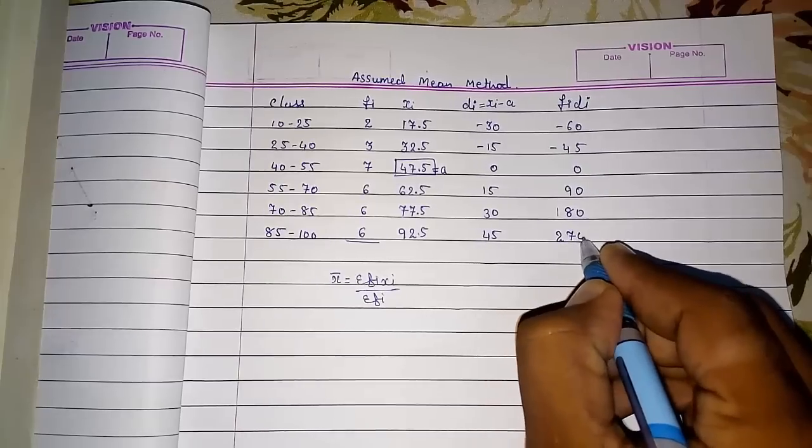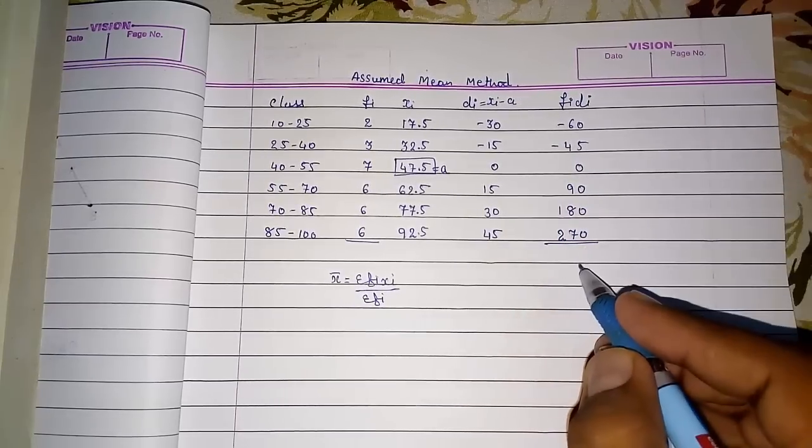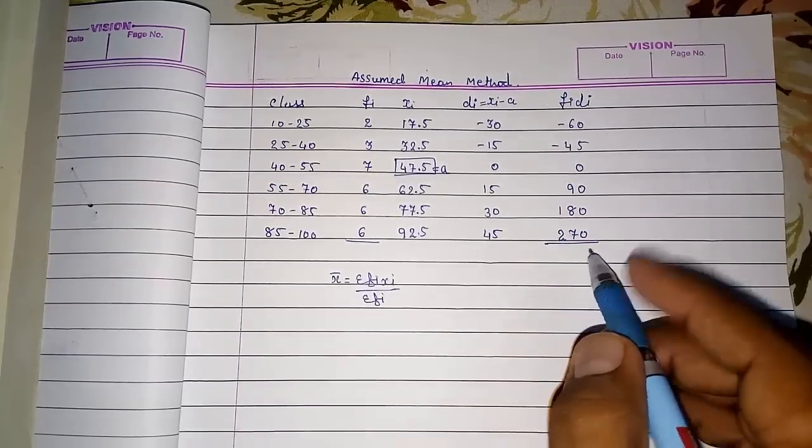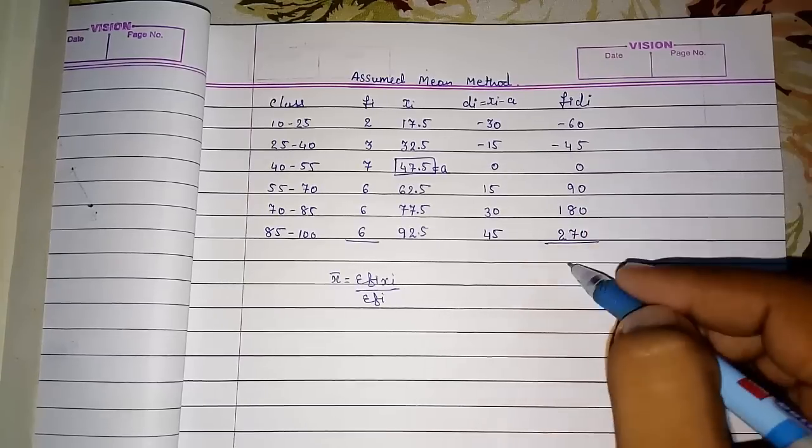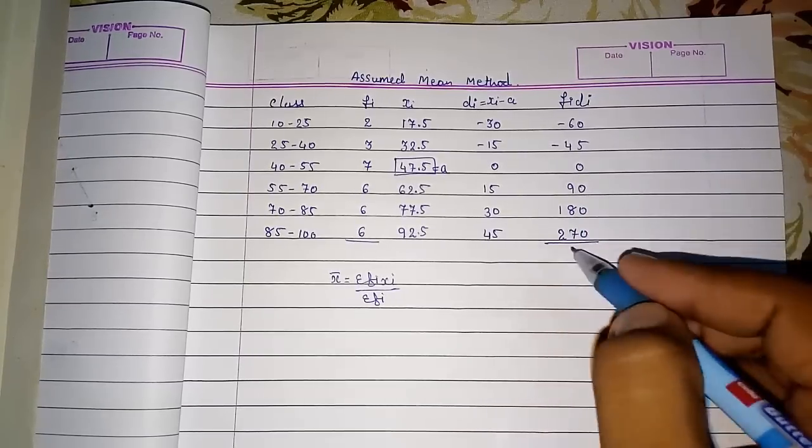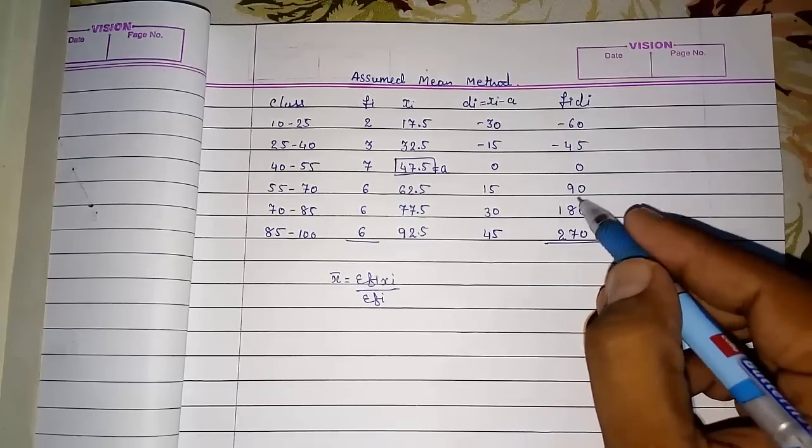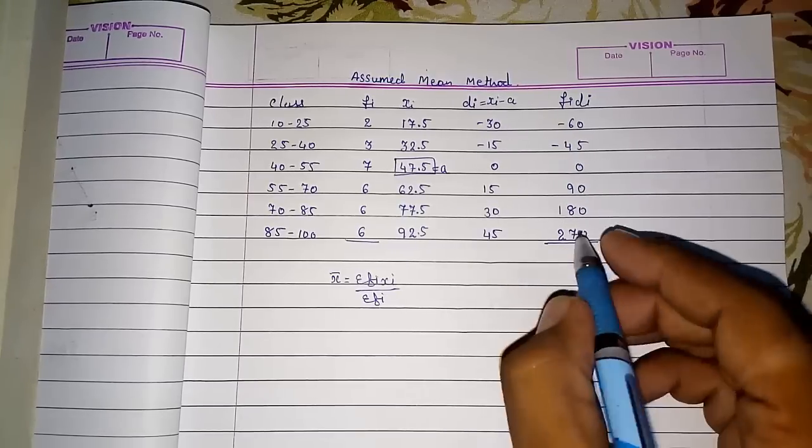Now we have to do addition of these. One number, and the addition. These are negative and these are positive, so it is 105. So it is 105.